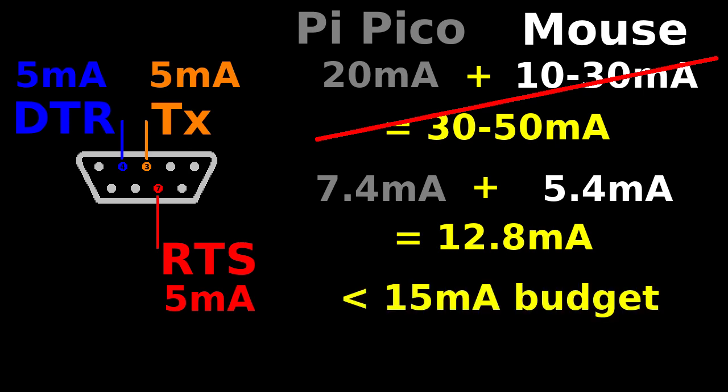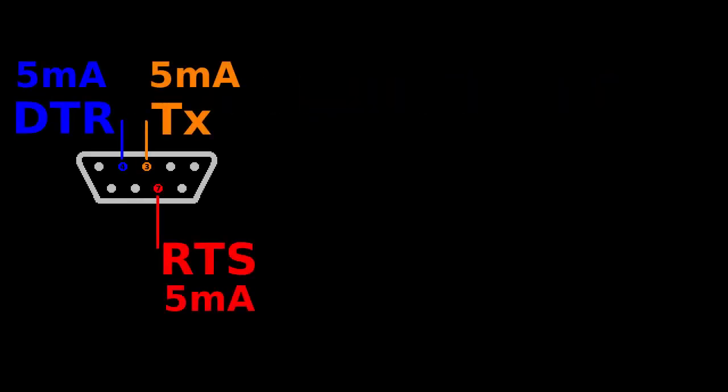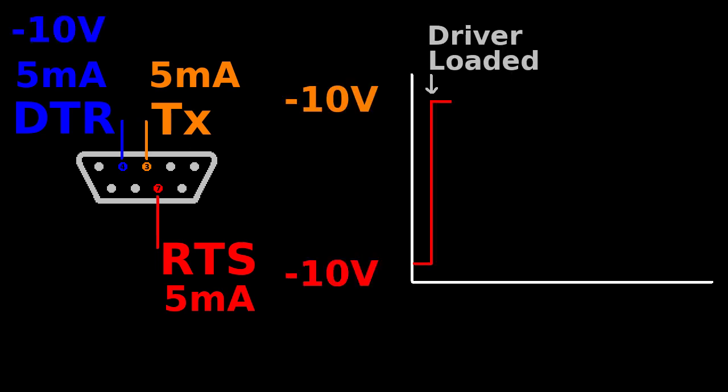Okay, now that we've tuned our most power consuming parts, let's focus on the circuit. And here is the first problem that we encounter. Initially, when the PC boots and before we run the mouse driver, all three pins of the serial port that we're planning to use for power—RTS, TX, and DTR—are low, at around minus 10 volts.